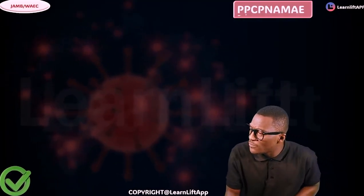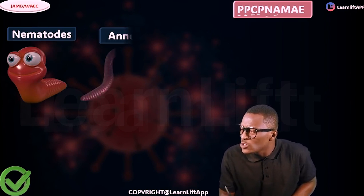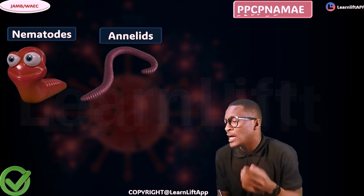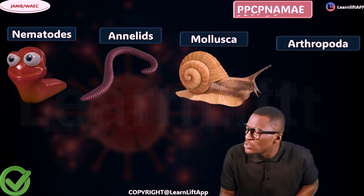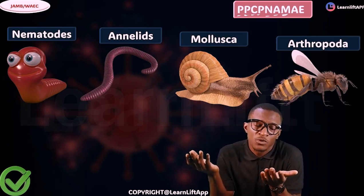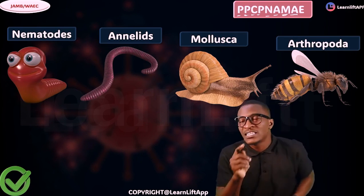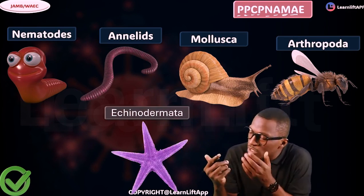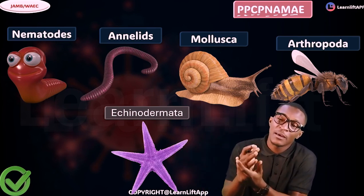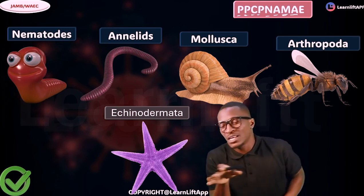Moving on: we have talked about P (Protozoa), P (Porifera), C (Coelenterata), and P (Platyhelminthes). Next, N is Nematoda — your roundworms. Then A is Annelida. Then M is Mollusca. Then I is Arthropoda — a very large class. And the final A is Echinodermata. Those are all the invertebrates — PCP NAMIA. This is just a classification overview so you have an idea of who they are before we treat them one after the other.